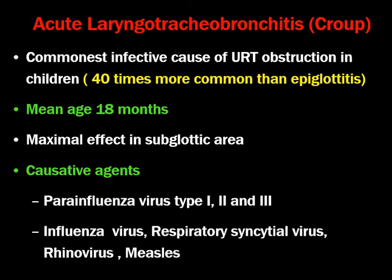Next is acute laryngotracheobronchitis — croup — which is the commonest infective cause of upper airway obstruction in children, 40 times more common than epiglottitis. This is a viral infection, whereas acute epiglottitis is a bacterial infection. Mean age is 18 months — slightly younger than acute epiglottitis which occurs at 3–5 years. The maximal effect is in the subglottic area, compared to the supraglottic area in acute epiglottitis. Causative agents are parainfluenza virus types 1, 2, and 3, which are the primary viral pathogens.